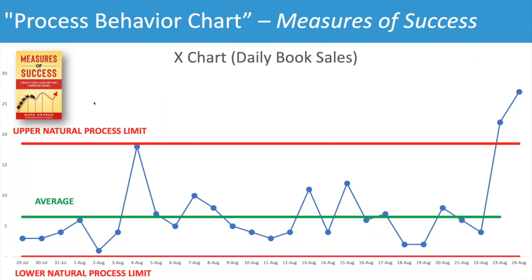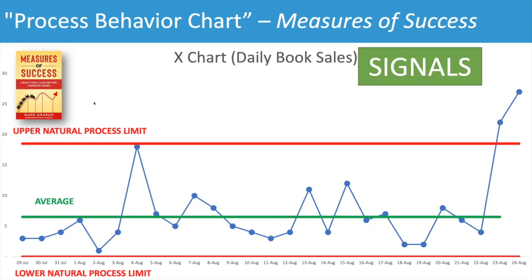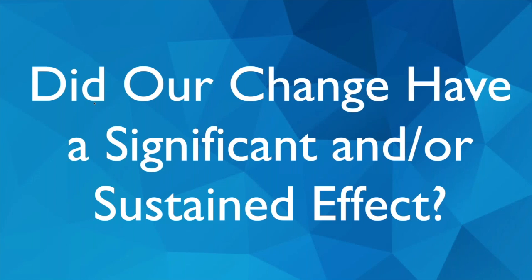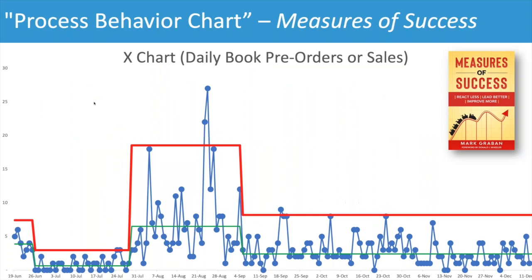As I continued over time, fluctuating around an average, I then had not just one but two data points above the upper limit — two consecutive signals where I, as an author and publisher, could ask what changed, what was different. The chart telling you there's a signal doesn't tell you what changed. I don't know why I had a spike in sales those days. It could be something out of my control, like somebody working at a company read the book, recommended it, and sent an email to a large number of people internally, leading to a spike in sales. We can also look at charts over time and ask: did a change to the system have a significant and sustained effect on sales?